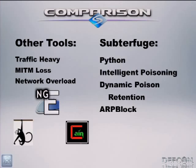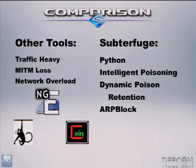Subterfuge is Python and open source. It also has what we call intelligent poisoning and dynamic poison retention. Intelligent poisoning allows you to change the throttle of how fast ARP poison packets are sent out. Rather than constantly doing ARP scans or spamming every single IP address, it's intelligent — it sends out one packet on a certain threshold and that's it.